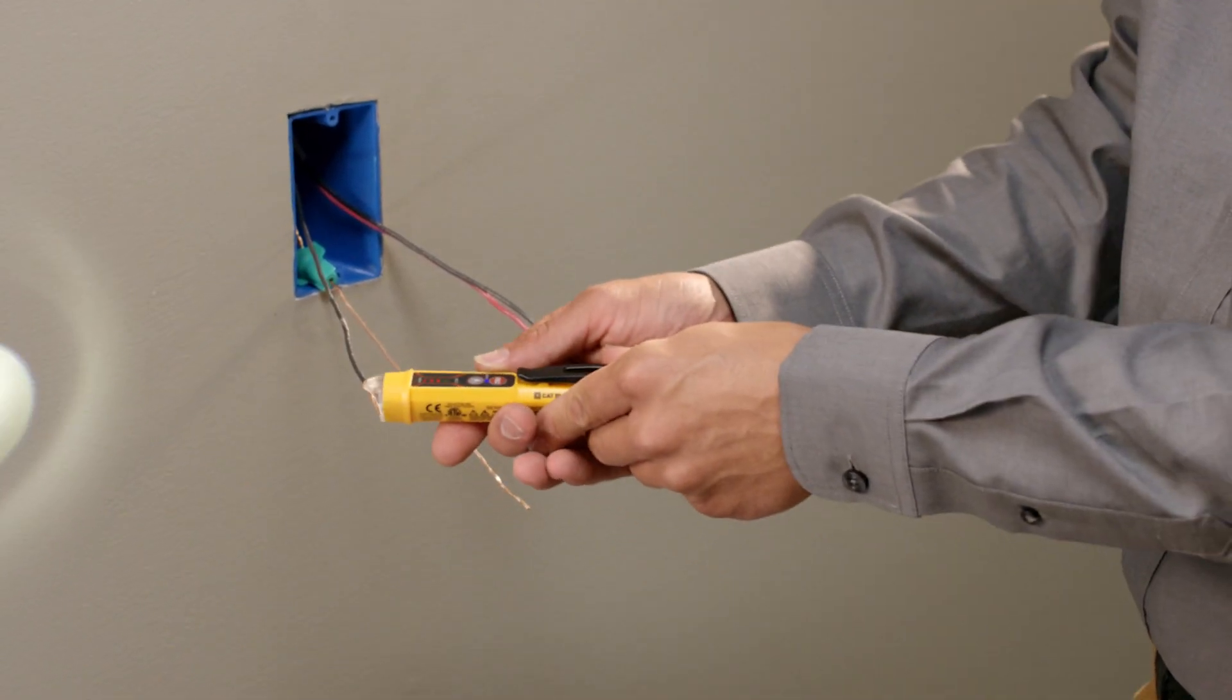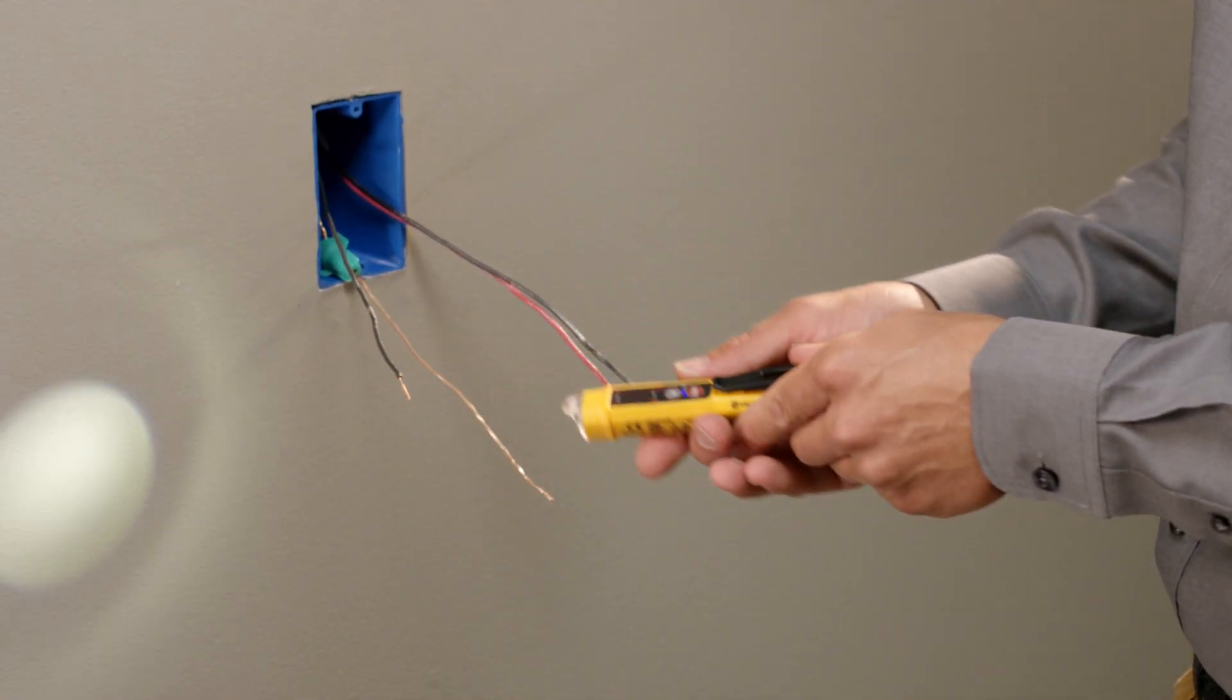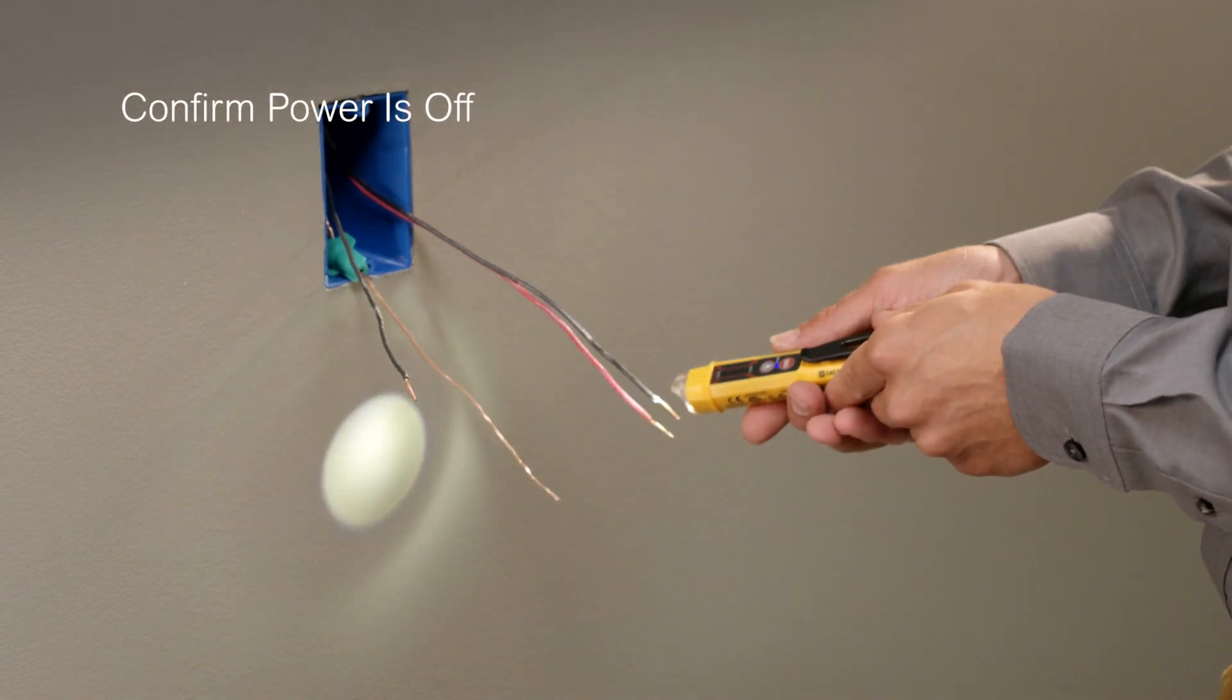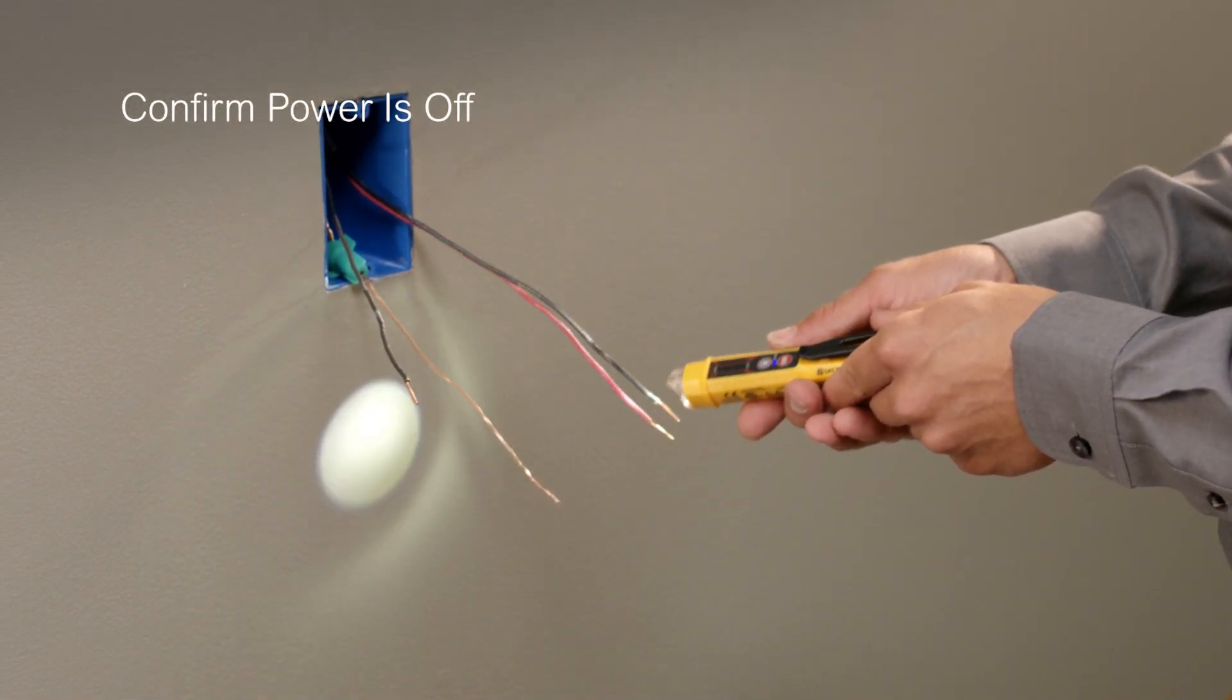Before beginning, ensure the circuit breaker that powers the switch has been turned off at the electrical panel. Confirm it's off using a properly rated voltage sensing device.